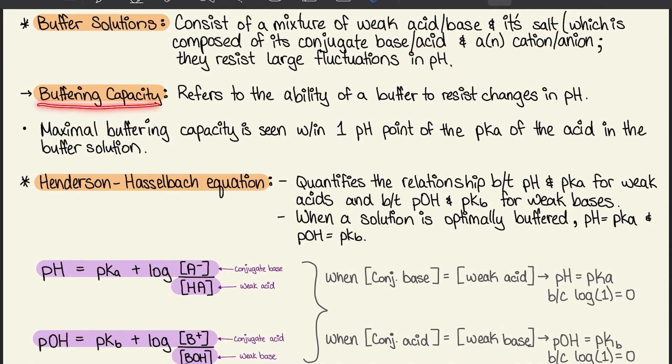Next we have buffering capacity, which refers to the ability of a buffer to resist changes in pH. The maximum buffering capacity is seen within one pH point of the pKa of the acid in the buffer solution.